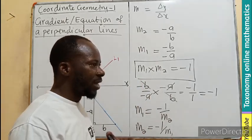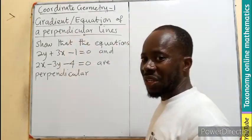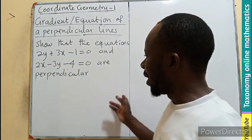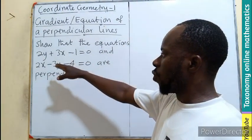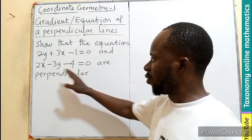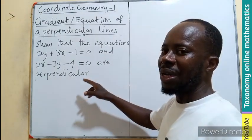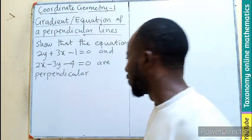Let's take a question to test this concept. Okay, so, we can have a question like this. We have to show that the equations 2y plus 3x minus 1 equals to 0 and 2x minus 3y minus 4 equals to 0 are perpendicular. So, if they are, we have to find the gradients.